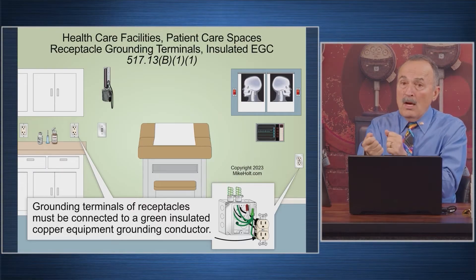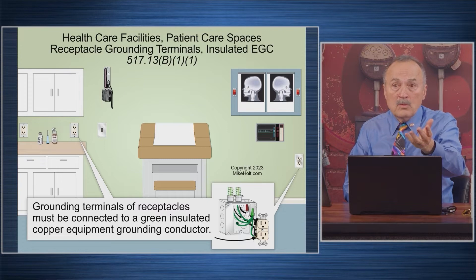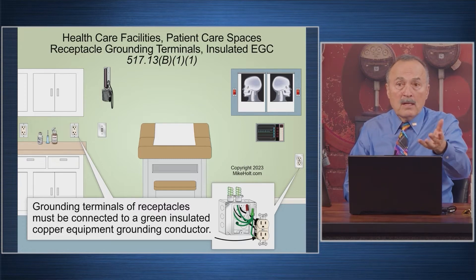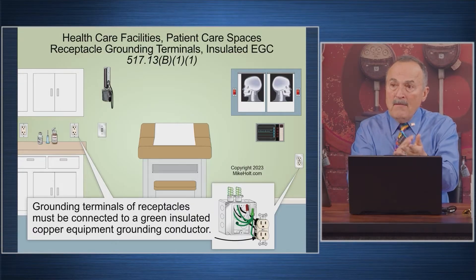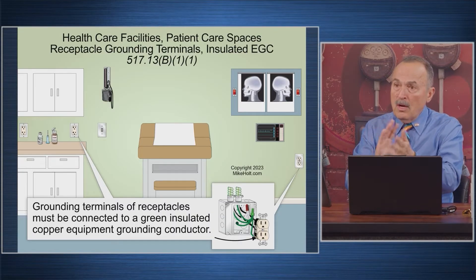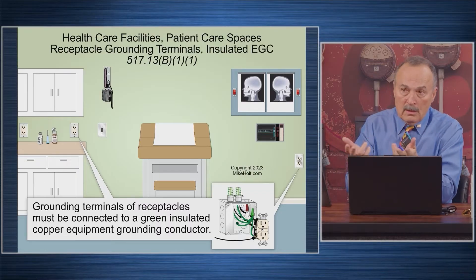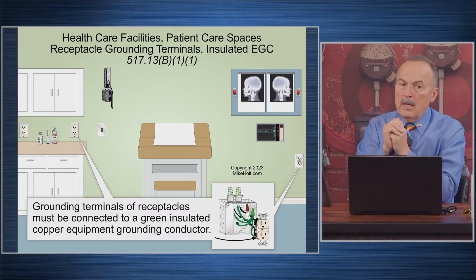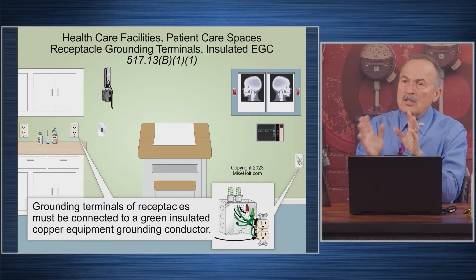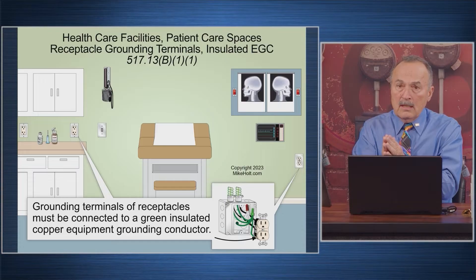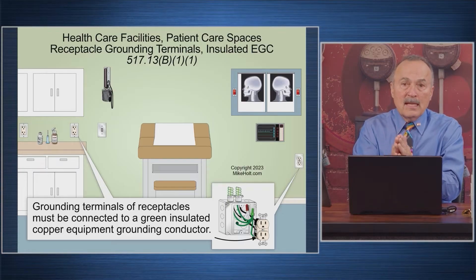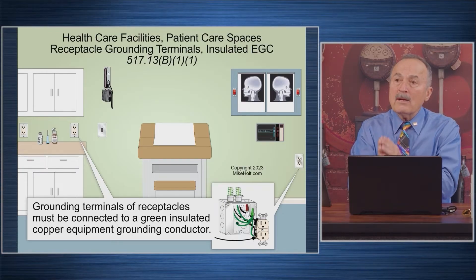Maybe I mess up the equipment grounding conductor itself. Michael Sloan died because the equipment grounding conductor was not properly put together in a connector. So by having a dual-function effective ground fault current path — what the code used to call 'redundant' — that allows us to provide a double level of protection. The wiring method itself serves as an equipment grounding conductor, and in addition we have an equipment grounding conductor of the wire type.